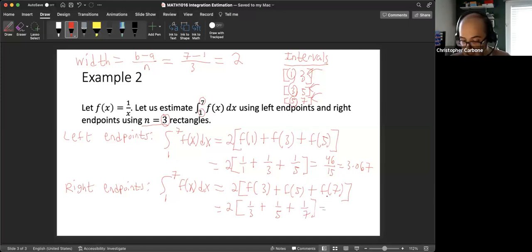As a fractional amount, this is 142 over 105. As a decimal, that is about 1.3524. And to get that best estimate with that average of these two, this is going to be, I'm going to use the fractional ones for this. 46 over 15 plus 142 over 105. This sum divided by 2. As a fraction, that is 232 divided by 105. And as a decimal, that is about 2.2095.